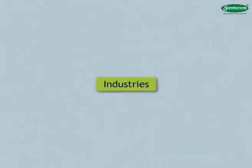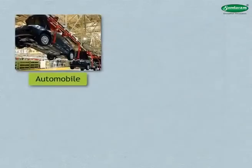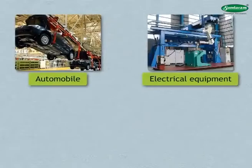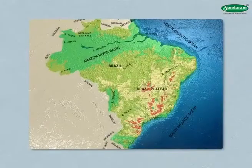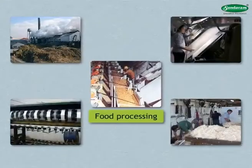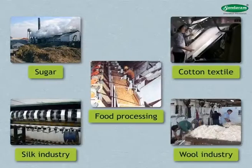In Brazil, automobile, electrical equipment, cement, and other factories are located near major cities. Food processing, sugar, cotton textile, silk, and wool textile industries have also developed here.